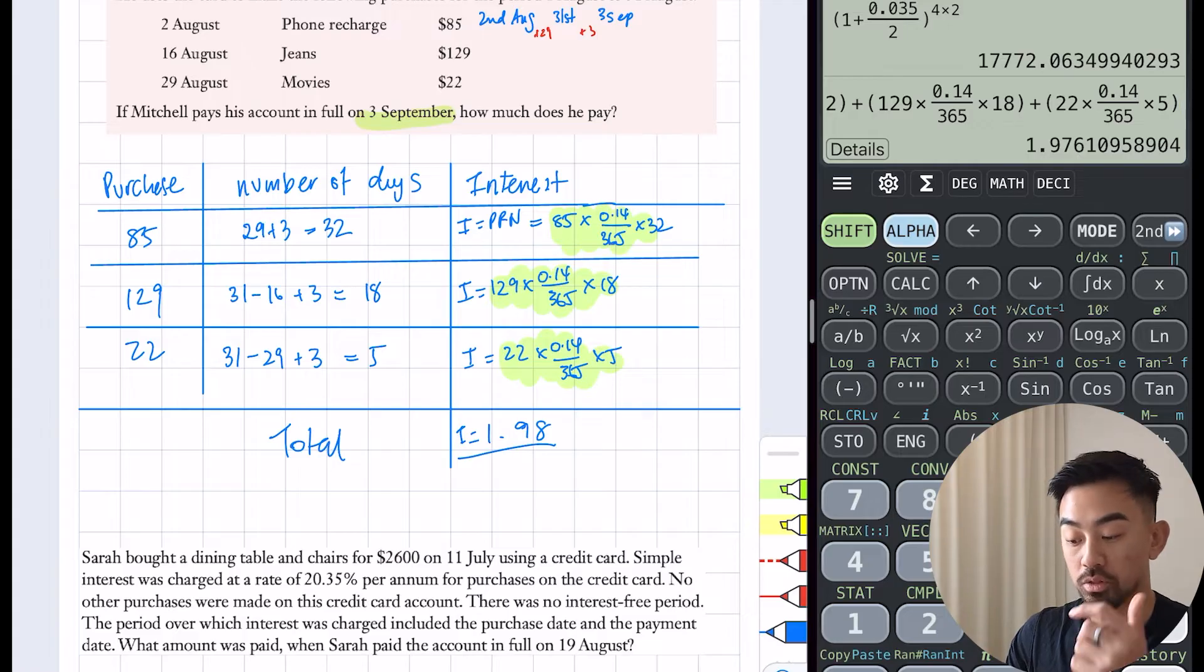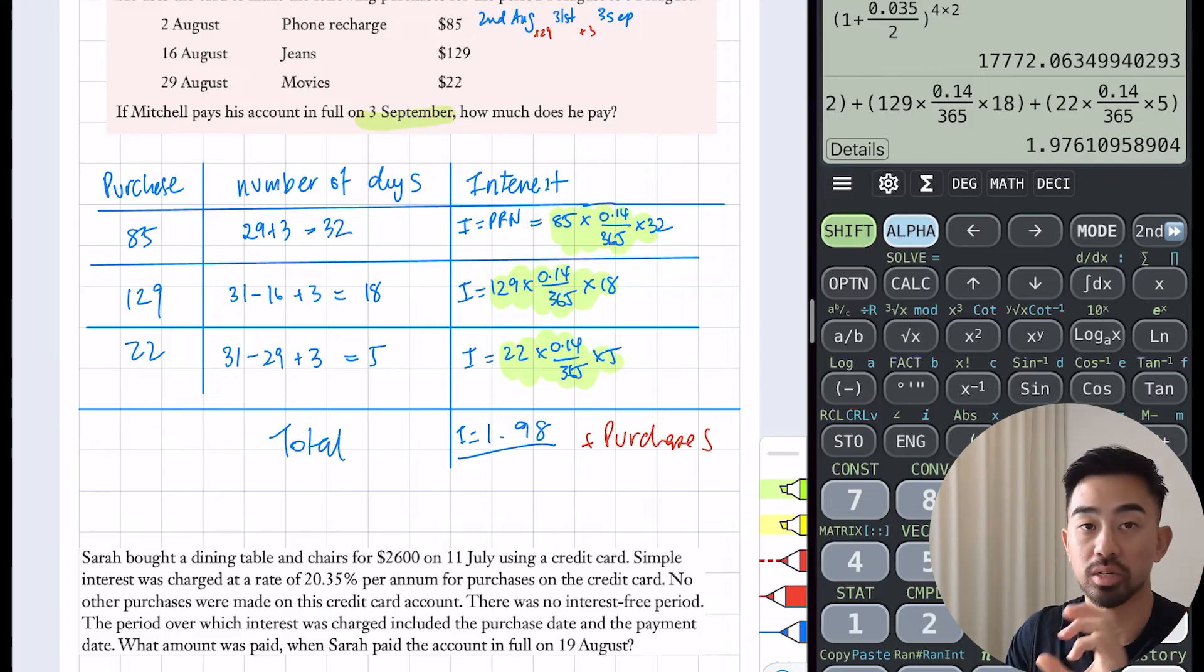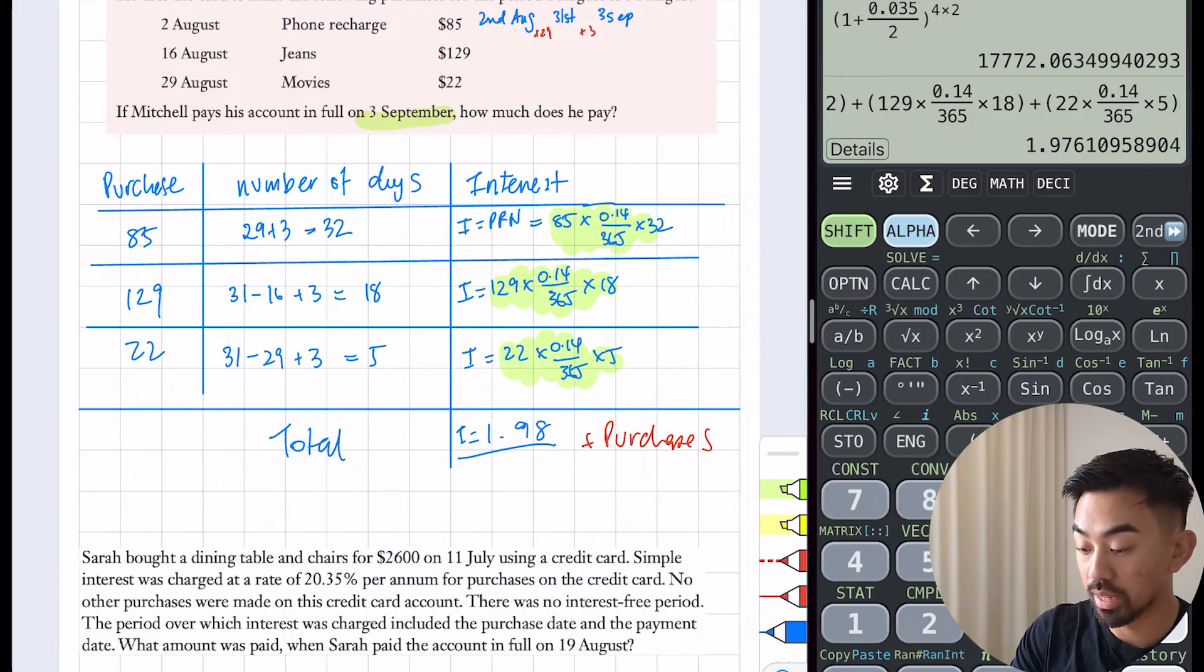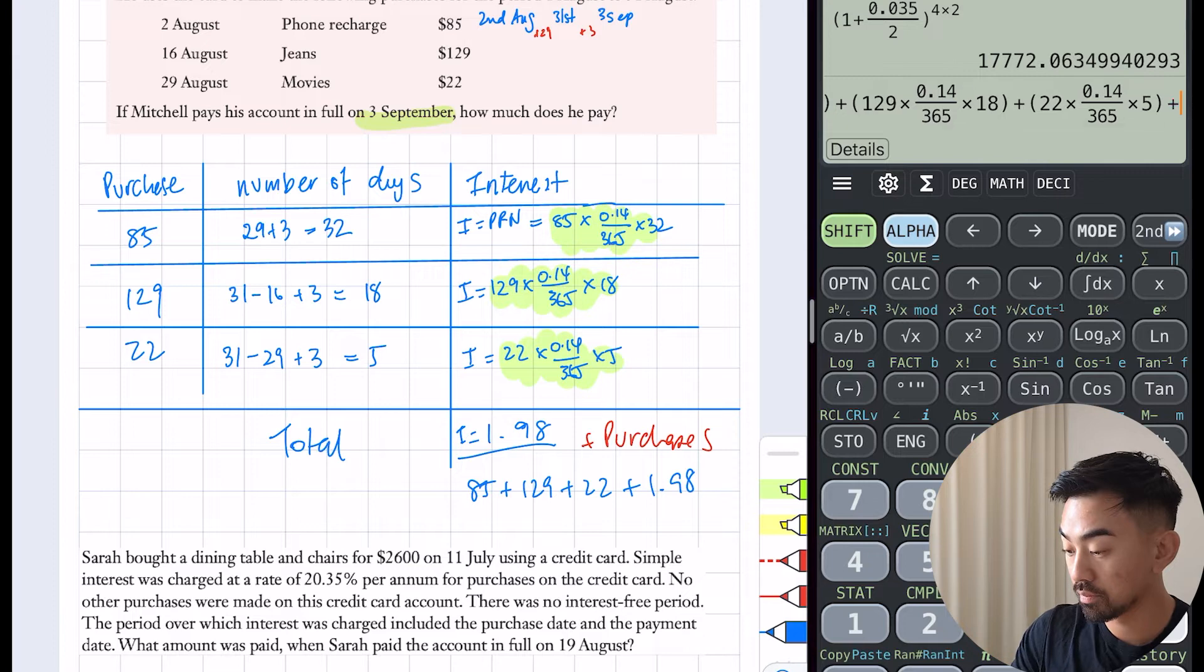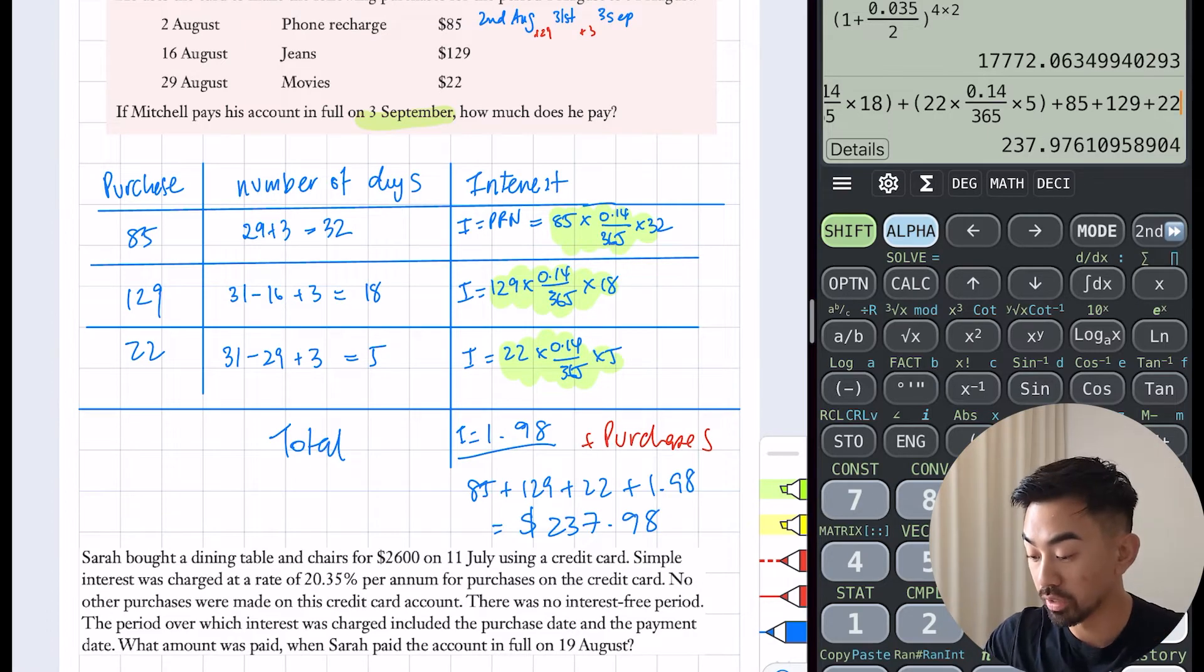But I need to work out how much he pays in total, so I actually have to add on his purchases because he's not just paying the interest. That's going to be 85 plus 129 plus 22 plus $1.98. So the total here looks like $237.98. In total he needs to pay that much off including interest.